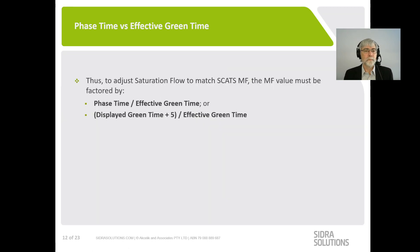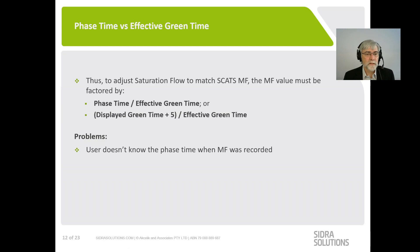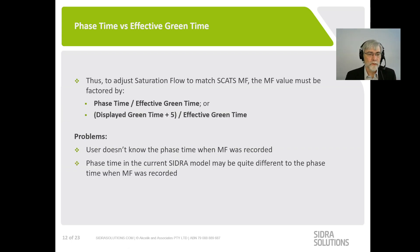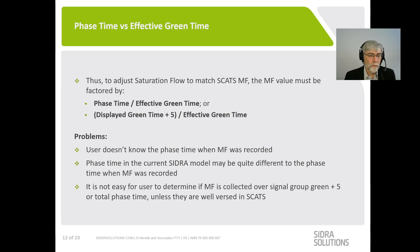It's important to adjust the MF by the phase time over effective green time factor, but this raises serious problems. The user doesn't know what the phase time was when the MF was recorded. The phase time in the current SIDRA model may be quite different — for example, you might be doing an AM peak model when the MF was recorded in the PM peak with a much different green time. A third, more minor problem is that it's not easy to determine whether MF is collected over signal group green plus five seconds or over the total phase time, unless you're well versed in SCATS.